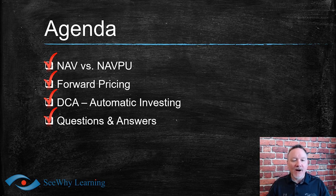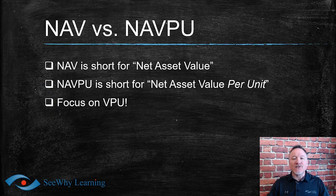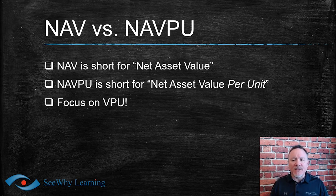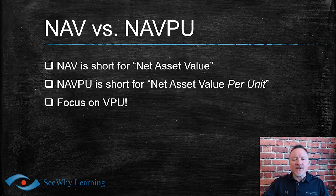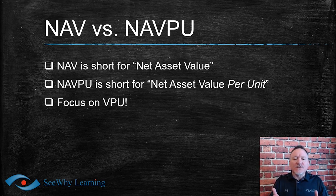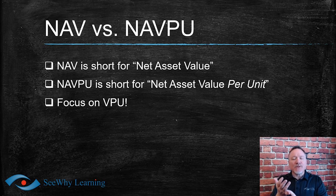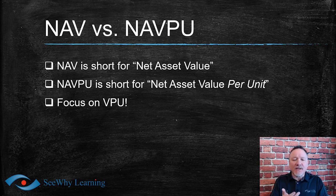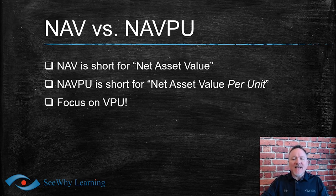A lot of students get confused between NAV and NAVPU. On your exam you'll likely get questions on these concepts, so understanding them can be the difference between getting marks with confidence or struggling. NAV stands for net asset value — all three words are key. You're looking at what the fund owns, the financial value of those assets, and since you want the net value, you deduct the fund's liabilities, what the fund owes.